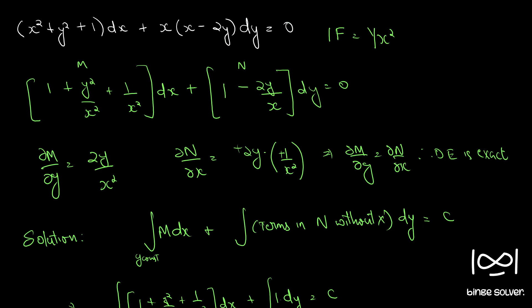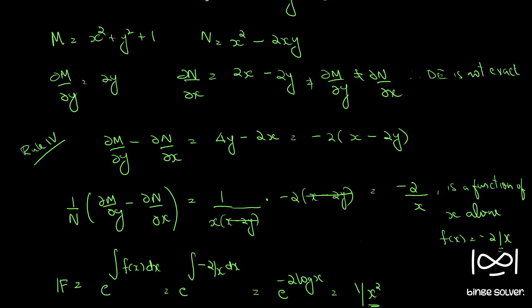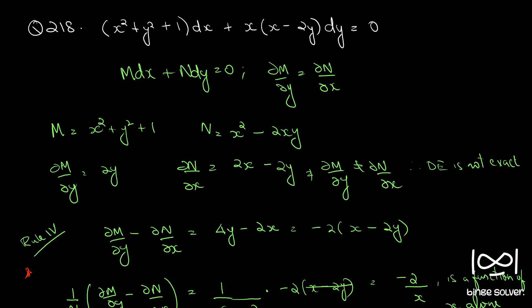We obtained the integrating factor as 1/x² using Rule 4. When you compute the difference and divide by N, note that complex terms may simplify — here (x − 2y) cancels and yields a function of x alone. Make sure to identify which rule applies when the equation M dx + N dy = 0 is not exact. This is the solution to question number 218.